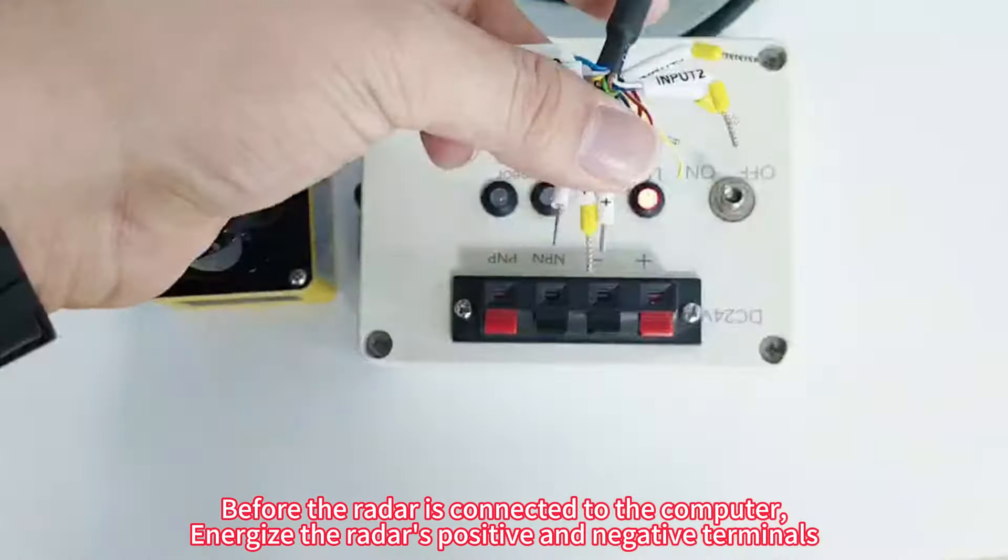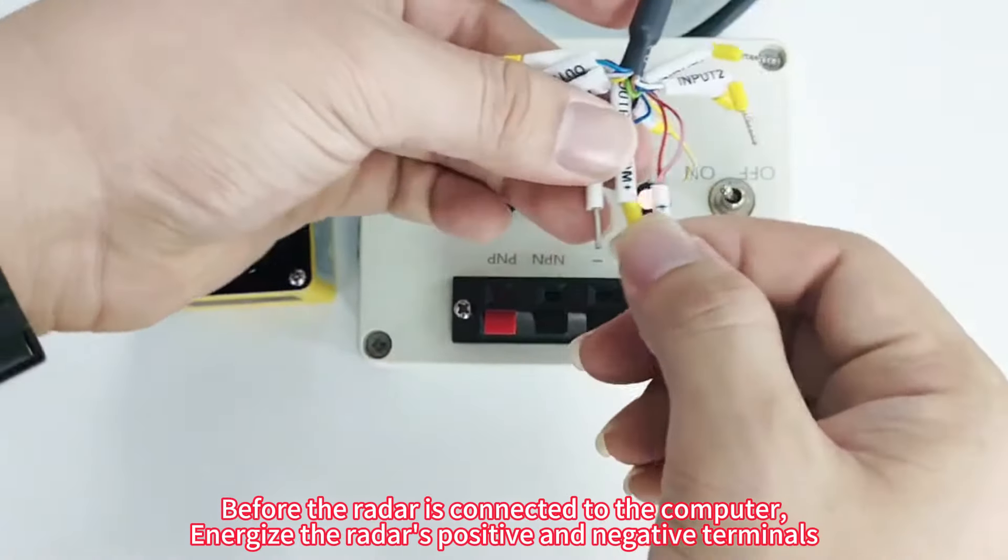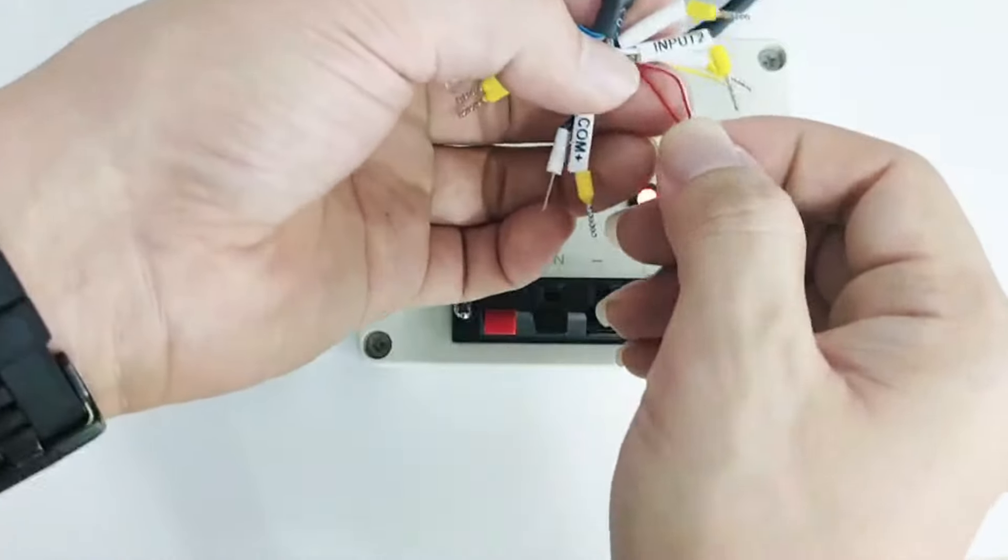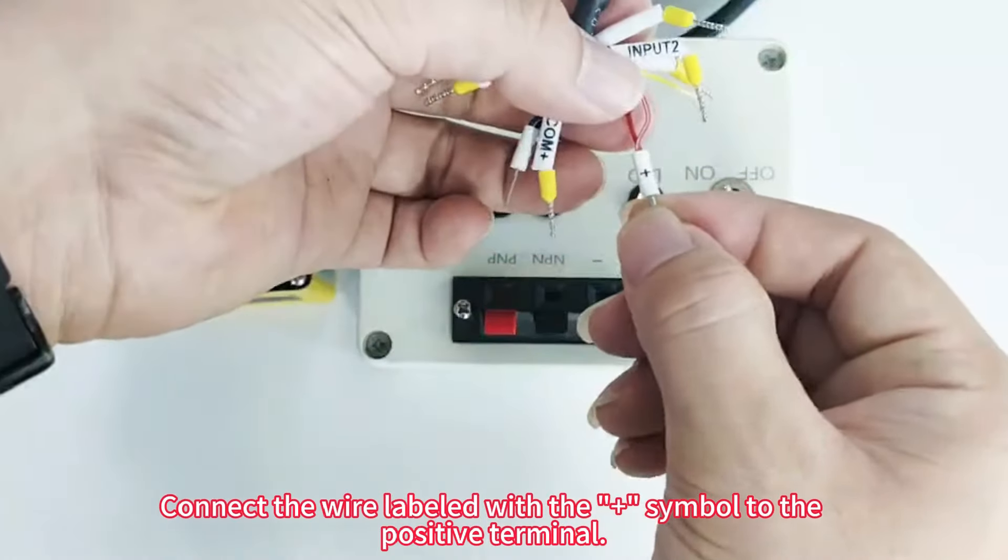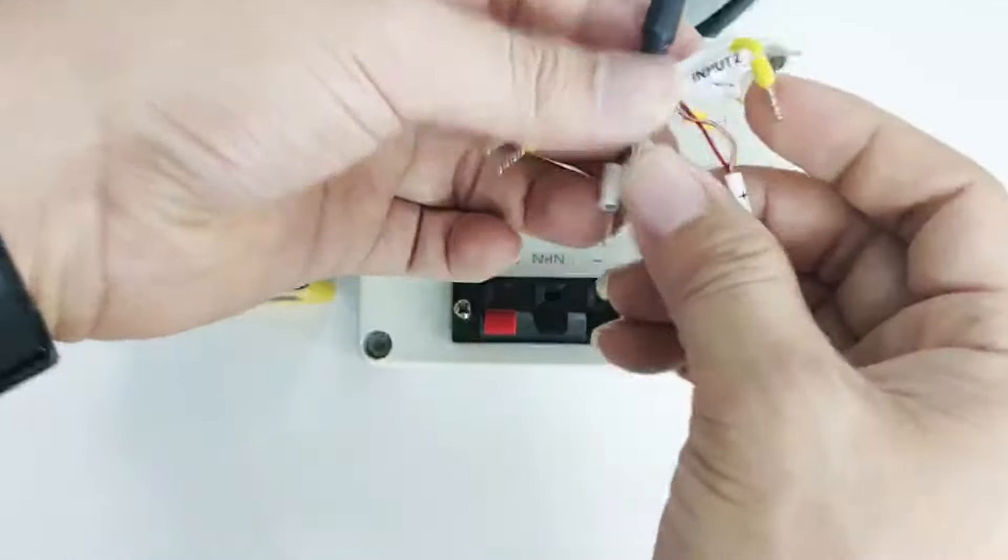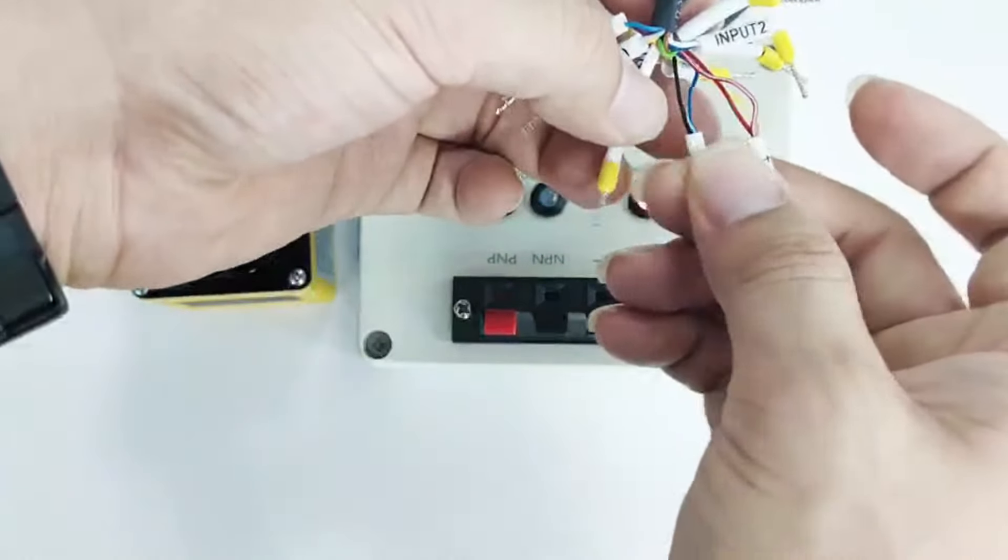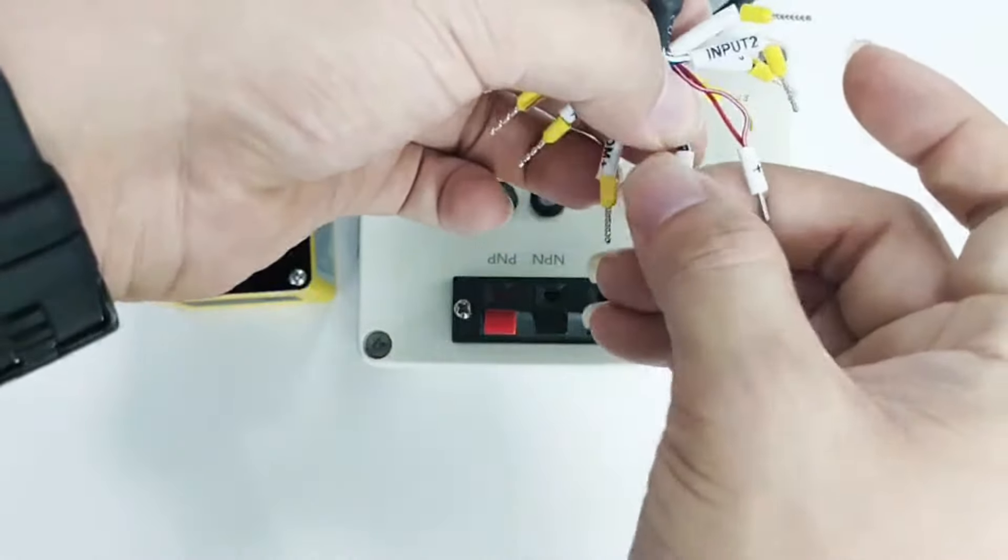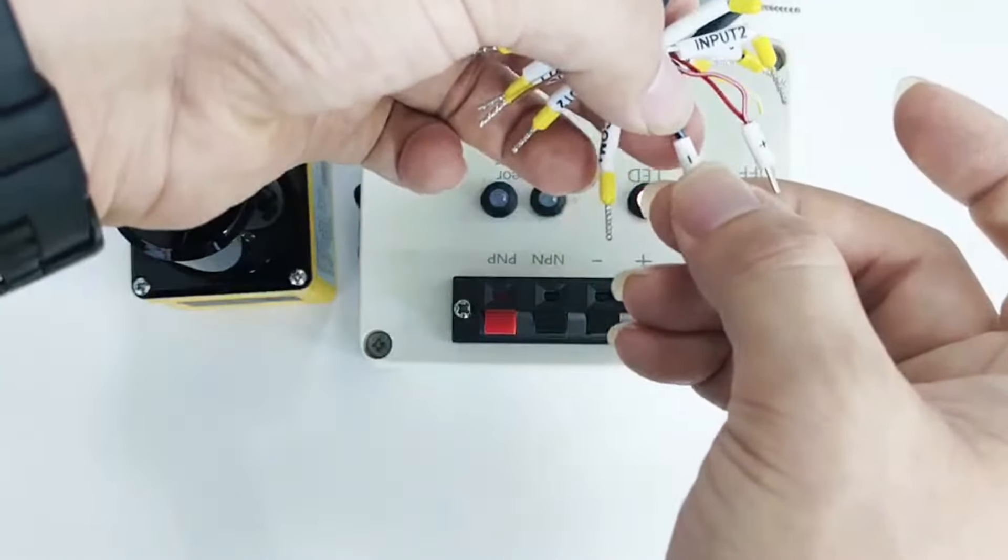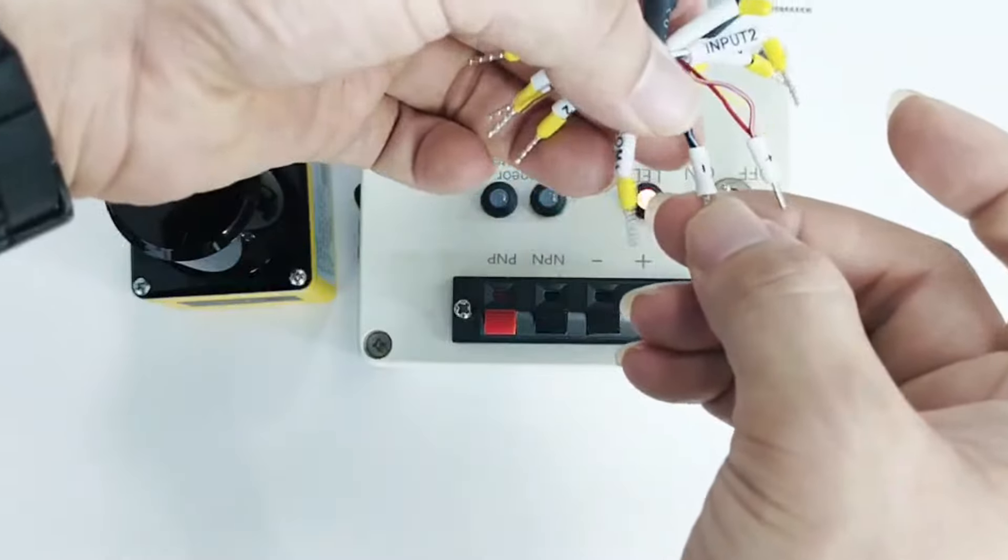Before the radar is connected to the computer, energize the radar's positive and negative terminals. Connect the wire labeled with the J symbol to the positive terminal. Connect the wire marked with the symbol to the negative terminal.